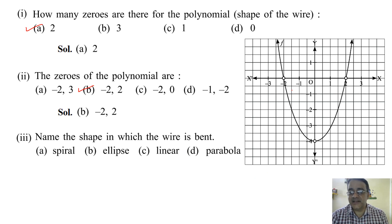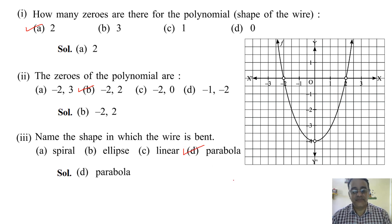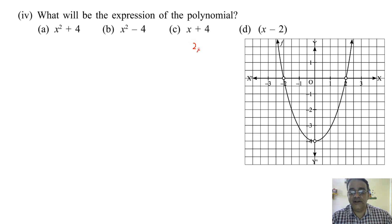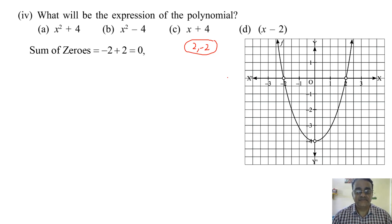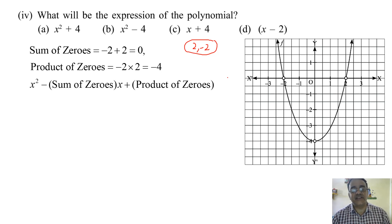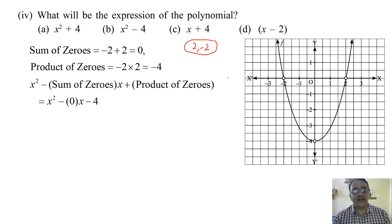Name the shape in which the wire is bent — parabola. It is an upward parabola. Next question: what is the expression of the polynomial? The two zeros are 2 and minus 2. Sum equals zero and product equals minus 4. Using the formula x squared minus sum of zeros into x plus product: x squared minus zero into x plus minus 4, giving x squared minus 4. Correct option is B.